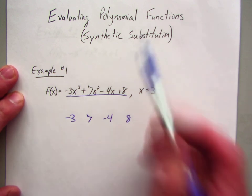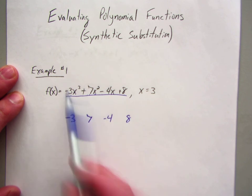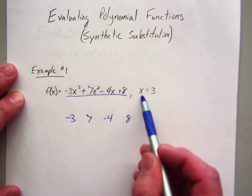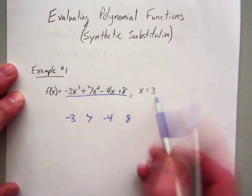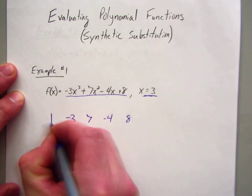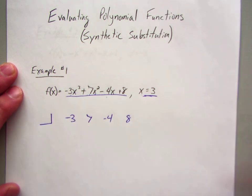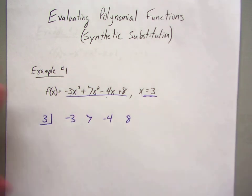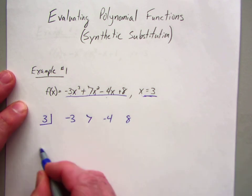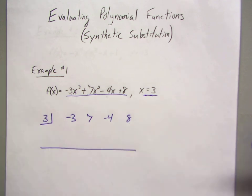Now I am substituting. I want to evaluate this function by substituting x equals 3. That right there, I make a little box to the left, and I put a 3 in there, because that is what I am substituting in. So then I draw a line underneath, and now we begin the process of synthetic substitution.